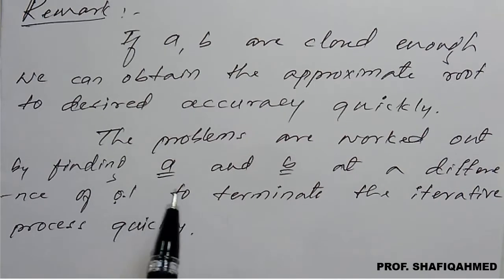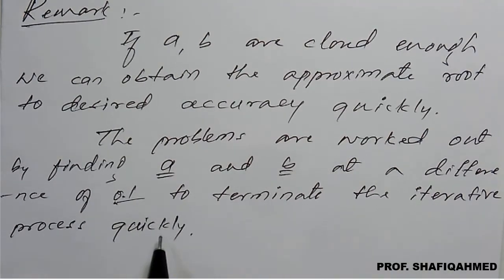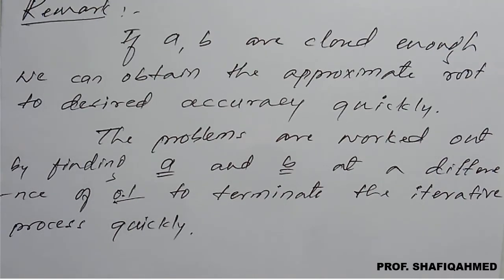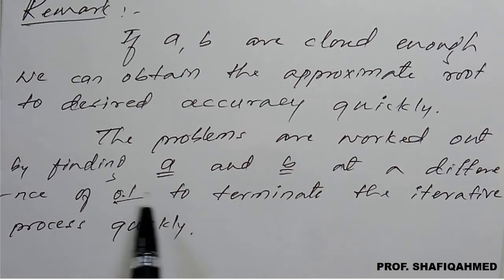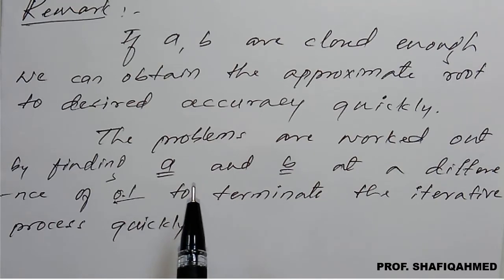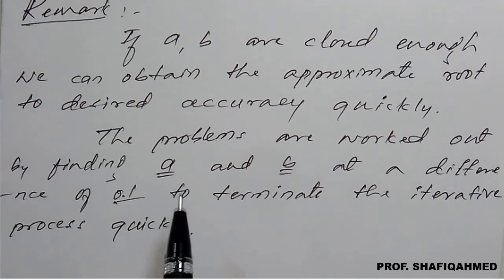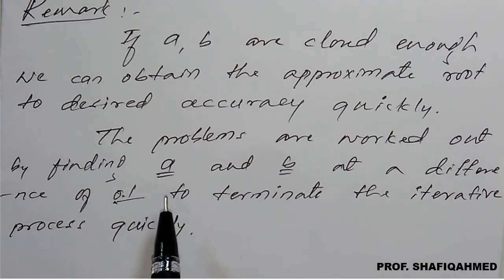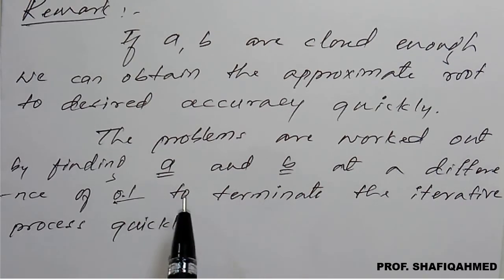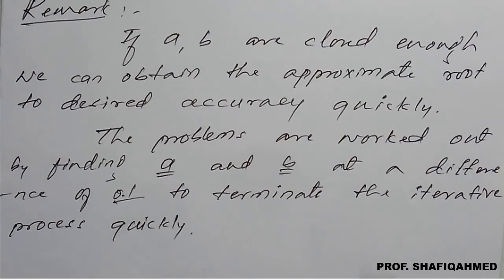So that the problems are work out by finding a and b at a difference of 0.1 to terminate the iterative process quickly. Otherwise the iterative process means the number of times formula what we apply it will go in a more step like for example if you are not applying this procedure so suppose example it will be after 10 iteration you may get the answer. If you apply this procedure so you may get the answer in 3 or 4 iteration you will get the final answer.